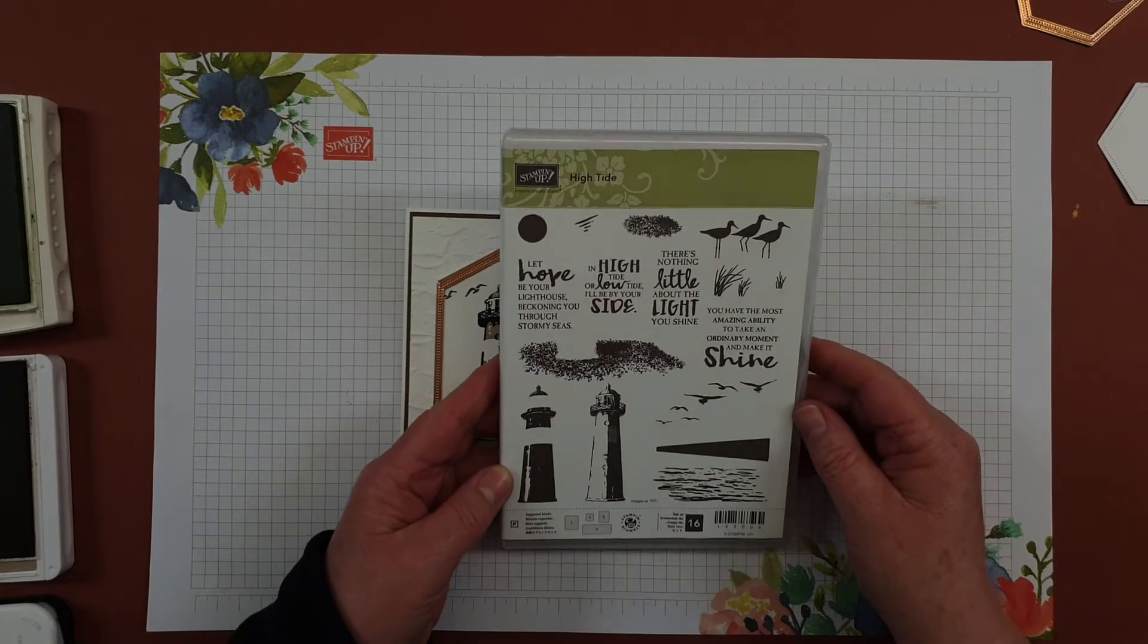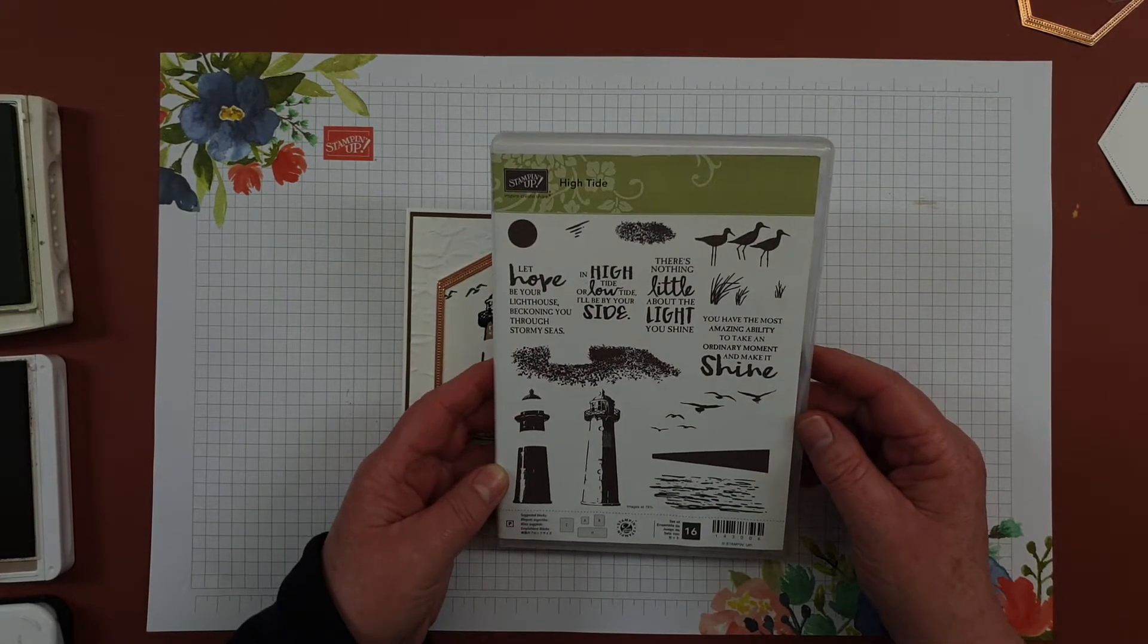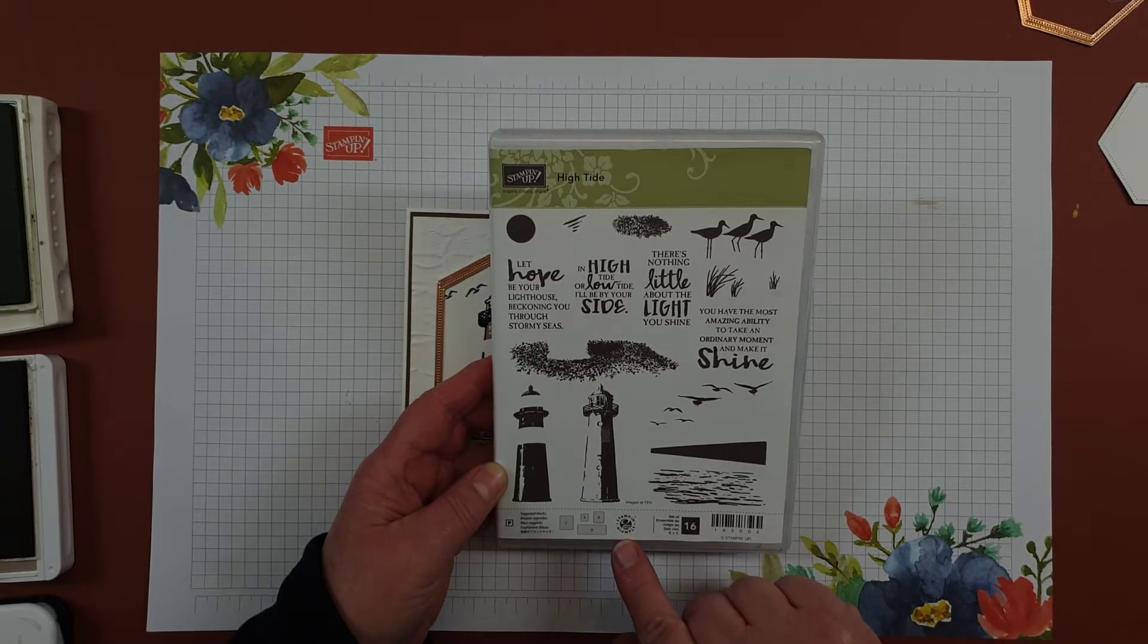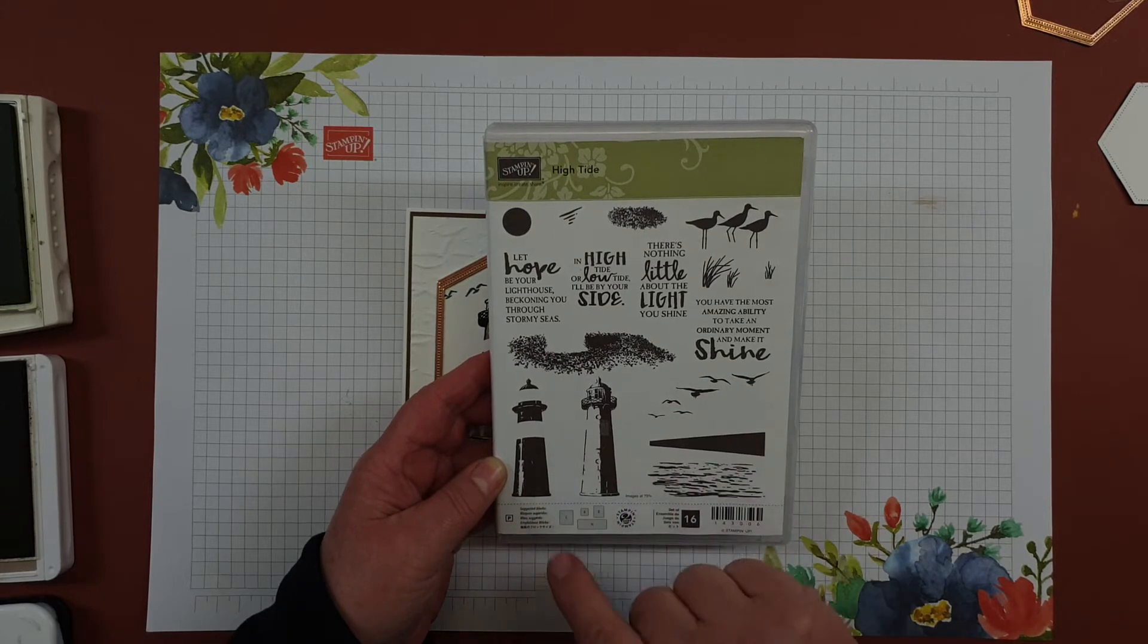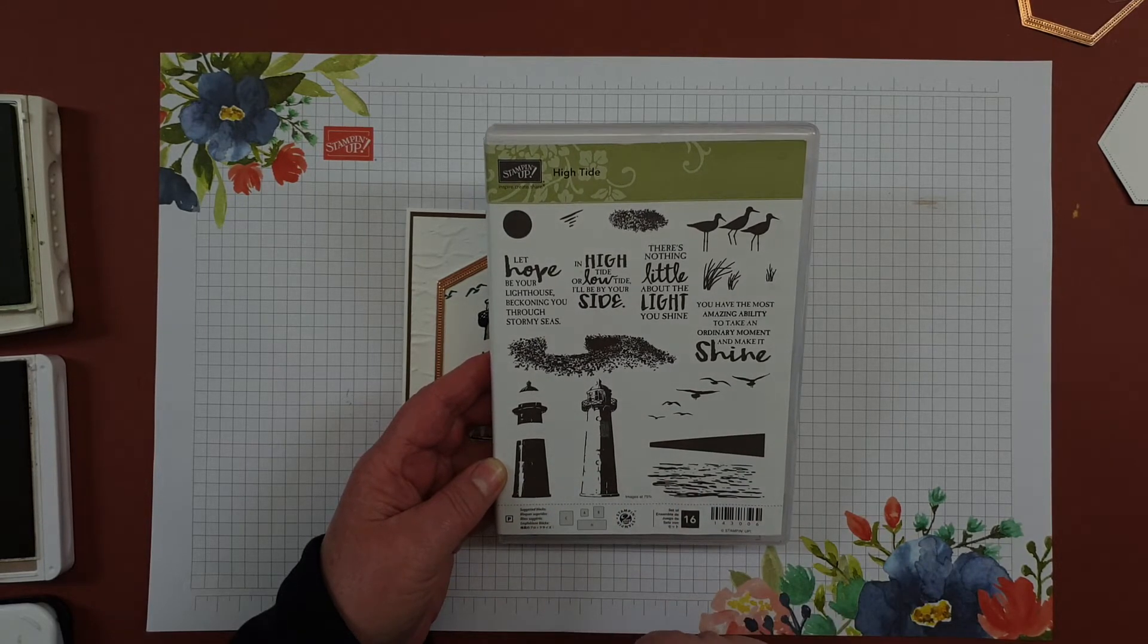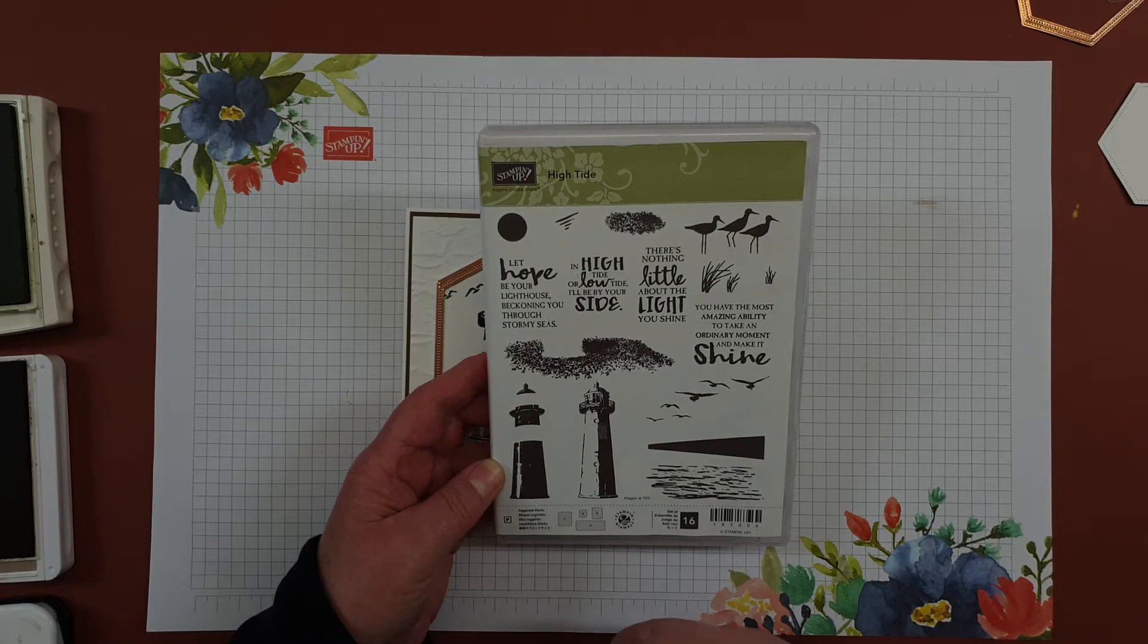I'll be using the high tide stamp set. It is a two-step stamping set and it uses images that will layer on top of each other to complete the image that you're trying to or wanting to get.